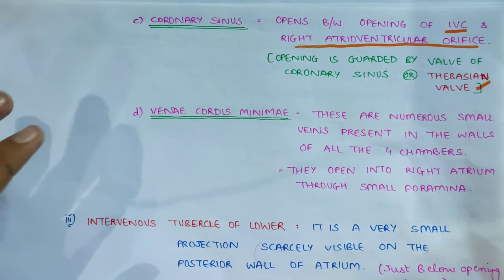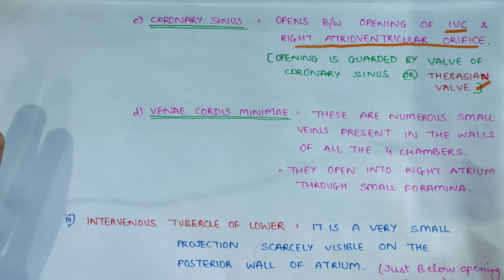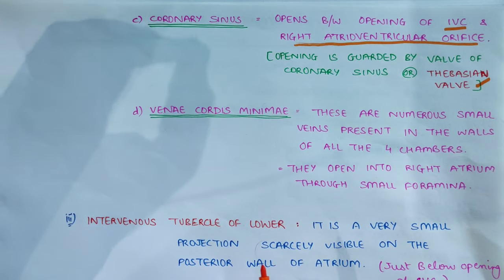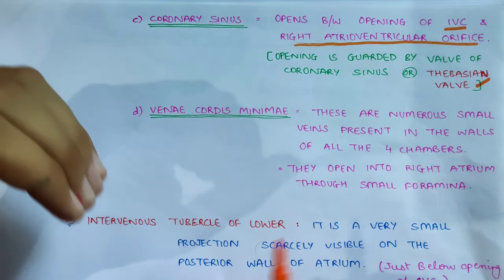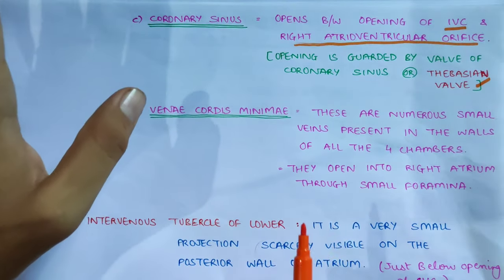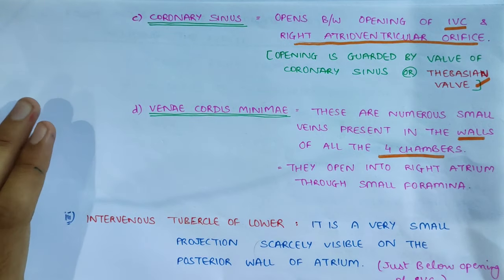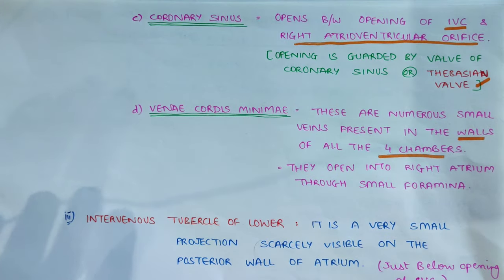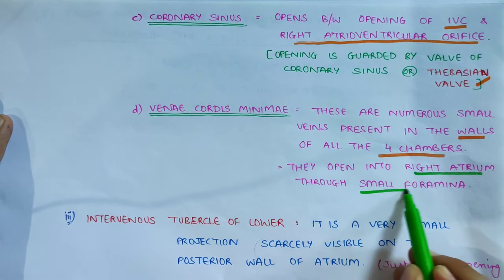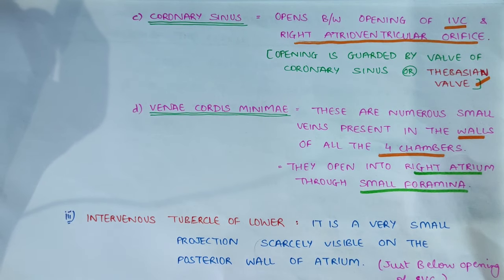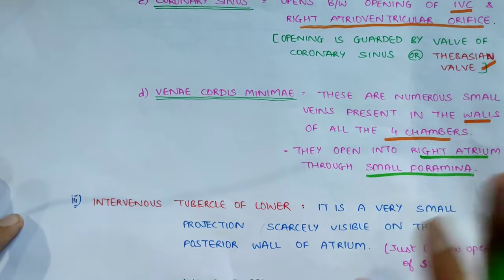Next we have the vena cordis minima. These are very small veins present in the walls of the four chambers of the heart. At the end, they drain directly into the right atrium.